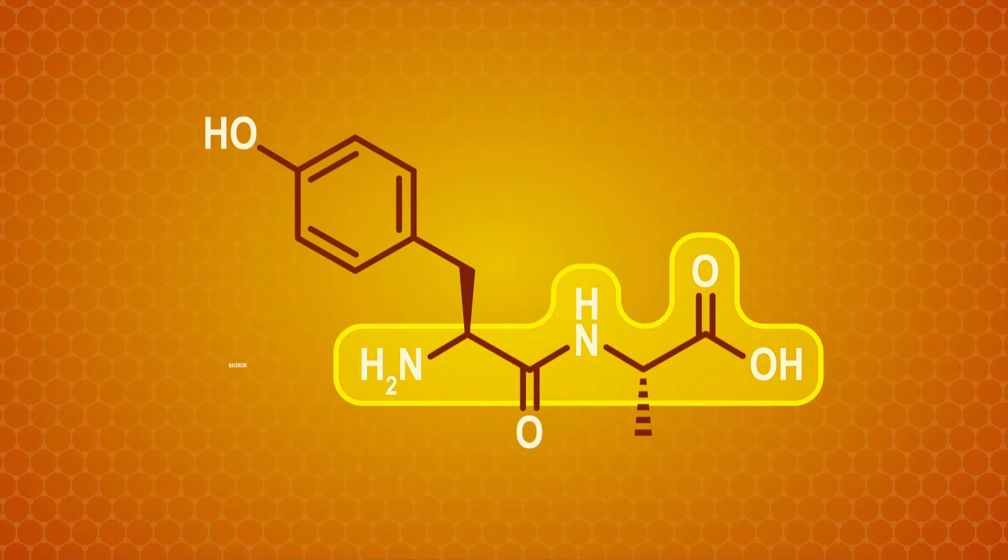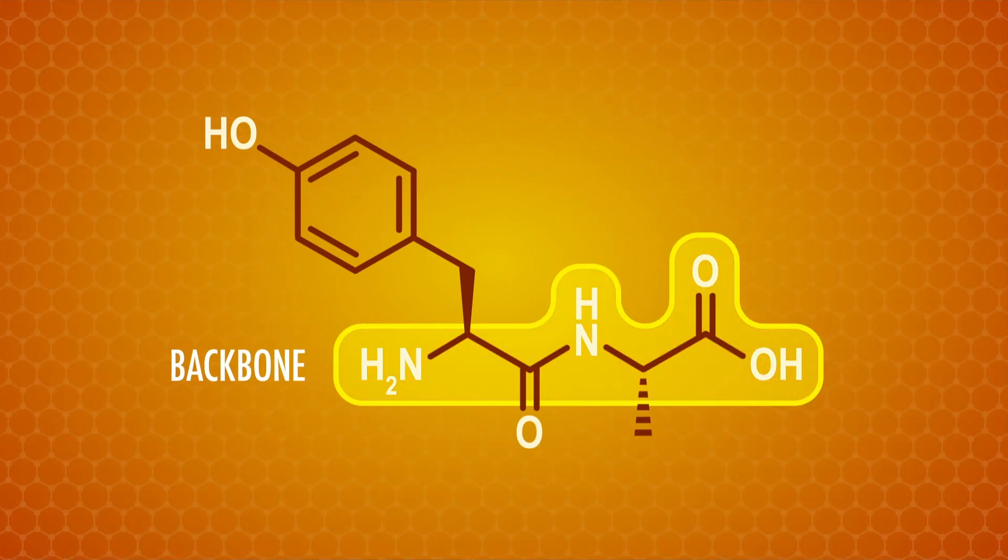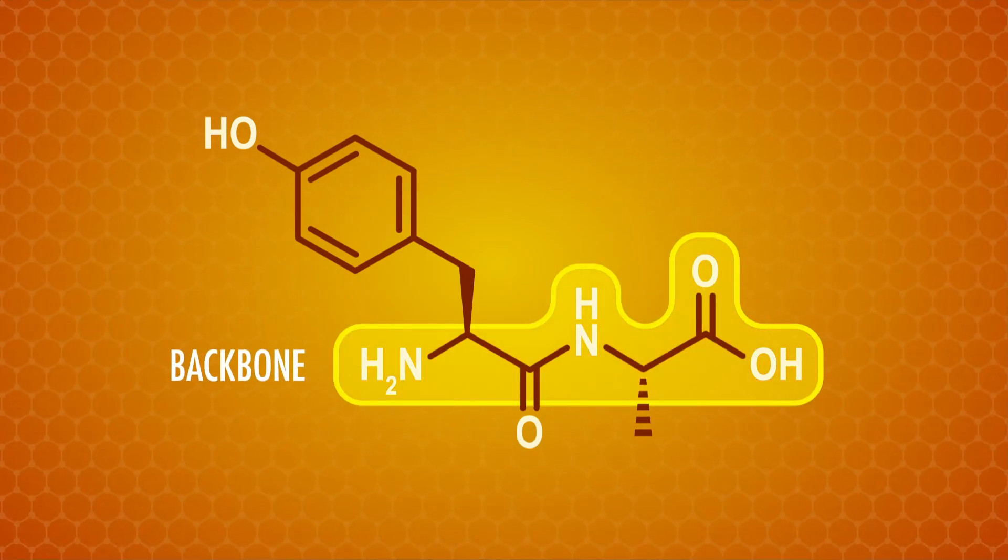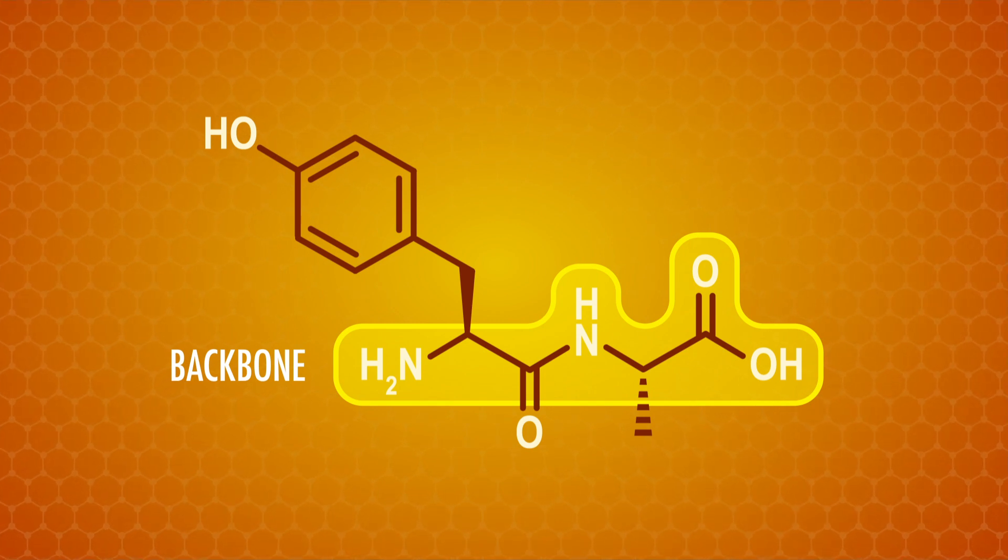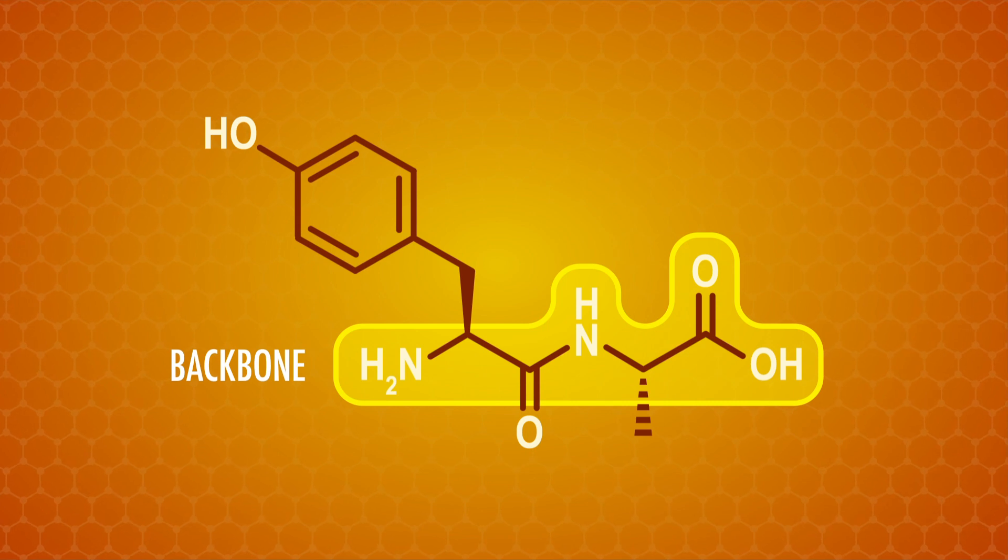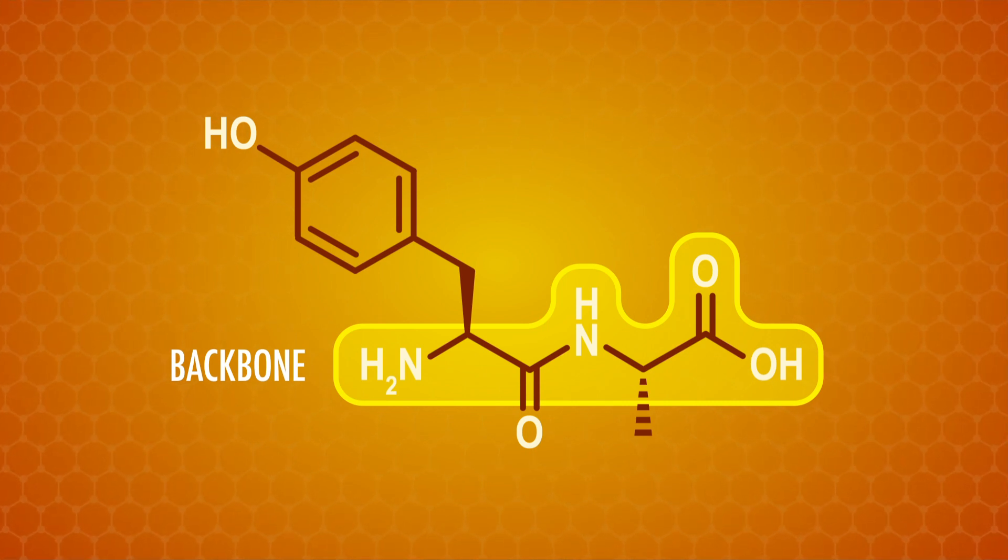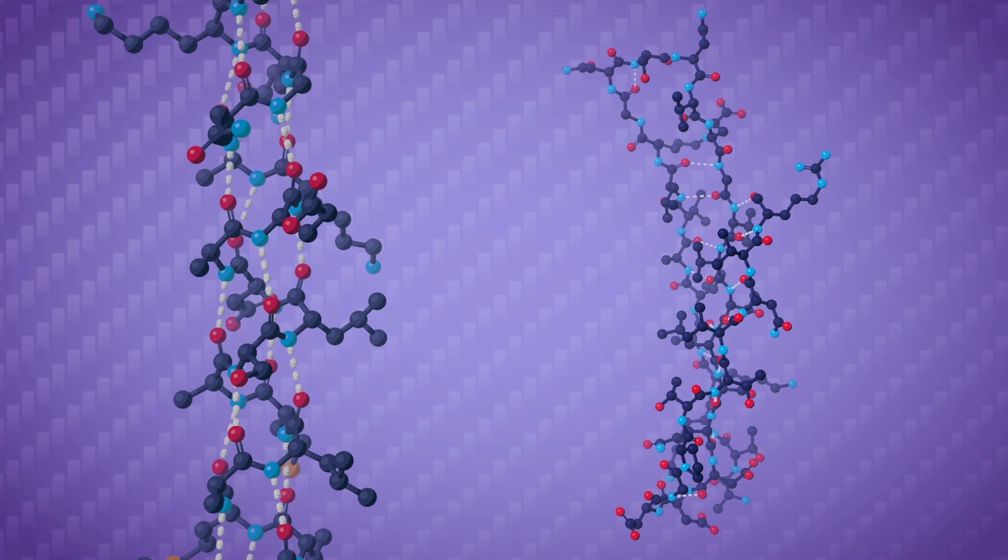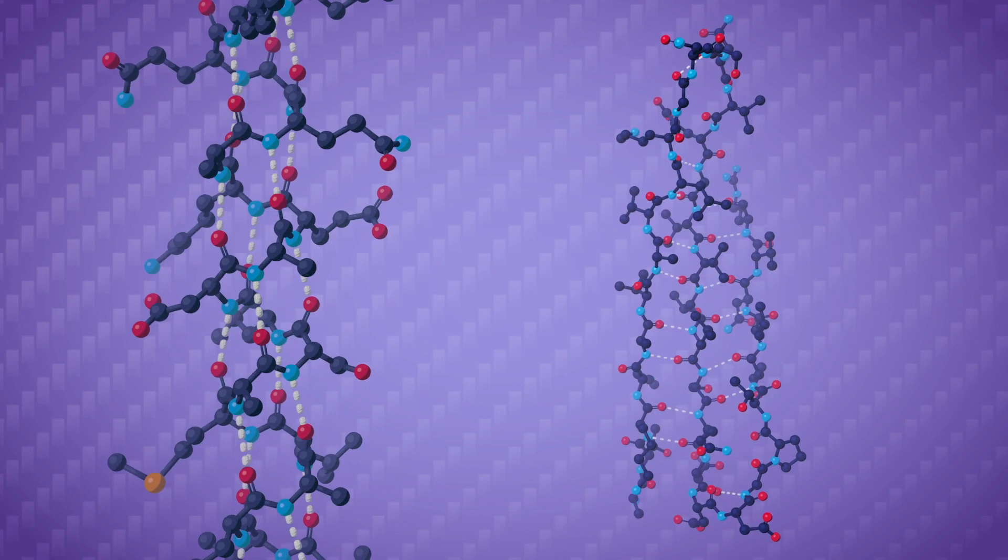The backbone is the part of the protein chain that doesn't include the side chains. And the primary structure folds up in two main ways to make the secondary structure of the protein, with hydrogen bonds forming between these backbone atoms. Here's what the hydrogen bonding looks like in two components of the secondary structure.